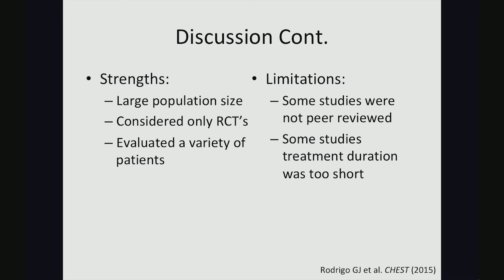Looking at the strengths and limitations of this study: strengths included a large population size — approximately 4,966 patients — consideration of only randomized controlled trials ensuring strongly designed studies, and evaluation of a variety of patients from mild to severe classification including adolescents aged 12 and beyond. Limitations included that some studies were not peer-reviewed, which means they may have been poorly designed or not published, and some studies had treatment durations that were too short to fully assess the effect of the intervention.